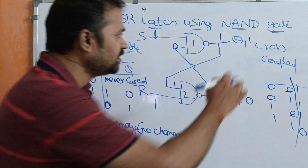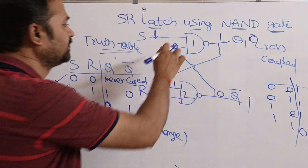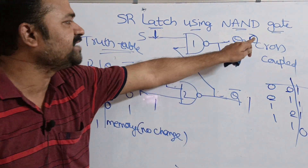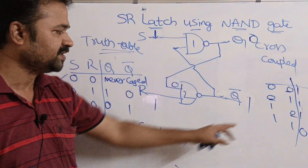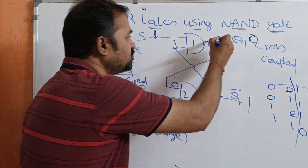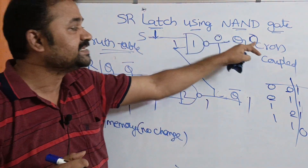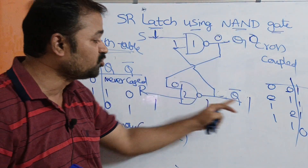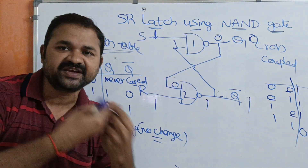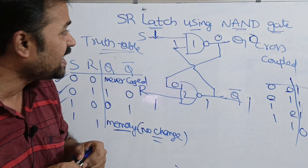Let us take one more scenario: if Q=0, then Q bar=1. Q bar (1) is passed as input to the first NAND gate, and Q (0) is passed as input to the second NAND gate. The first NAND gate inputs are 1 and 1, giving output 0, which is the previous output. The second NAND gate inputs are 0 and 1, giving output 1, which is also the previous output. So when inputs are 1 and 1, there is no change — it retains the previous state, confirming memory behavior. This is about SR latch using NAND gate.